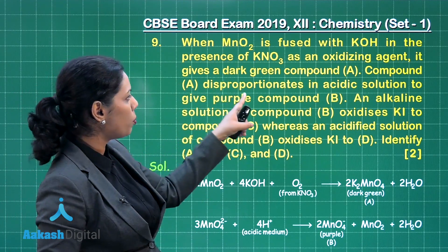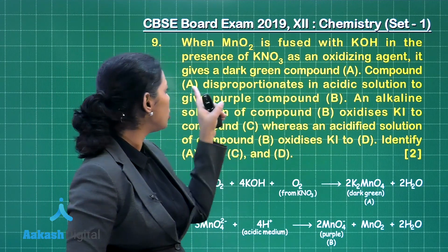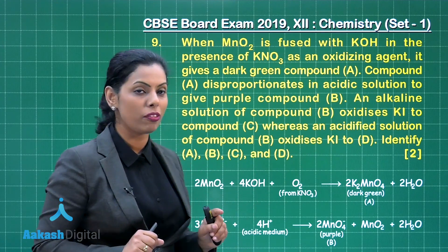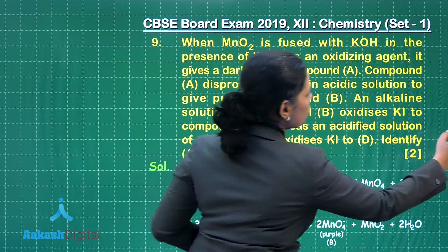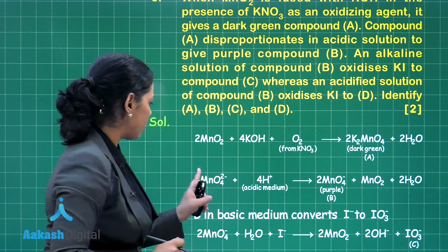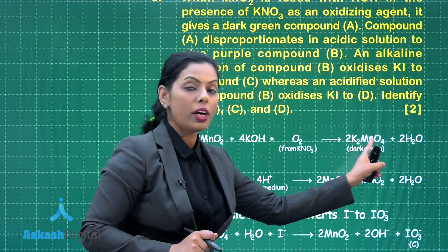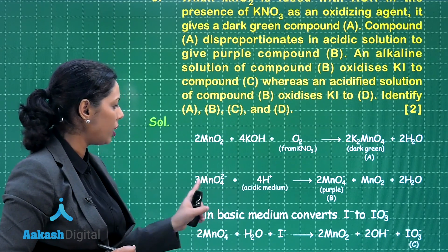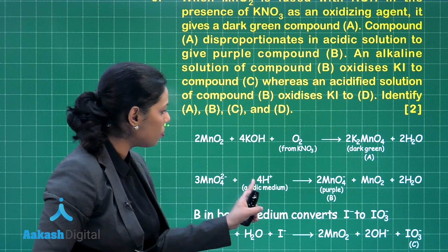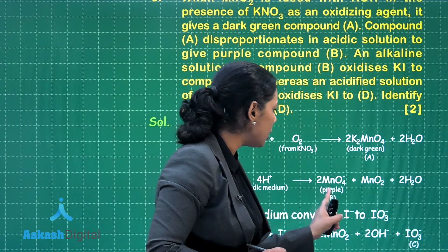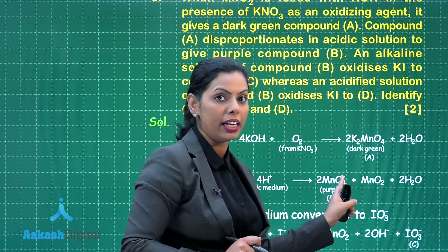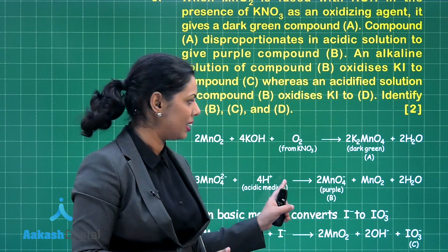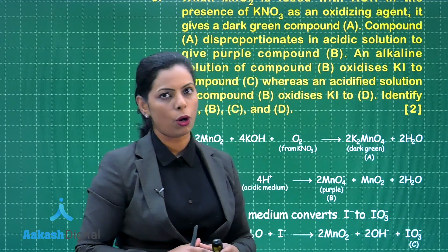MnO₂ reacts with KOH and O₂ coming from KNO₃ (which acts as an oxidizing agent) to give K₂MnO₄ — potassium manganate — which is a dark green colored compound. So compound A is K₂MnO₄. In the second part, compound A disproportionates in acidic solution to give purple compound B. The MnO₄²⁻ ion disproportionates in acidic medium to form the purple-colored MnO₄⁻ ion — compound B is potassium permanganate — along with MnO₂ and H₂O.